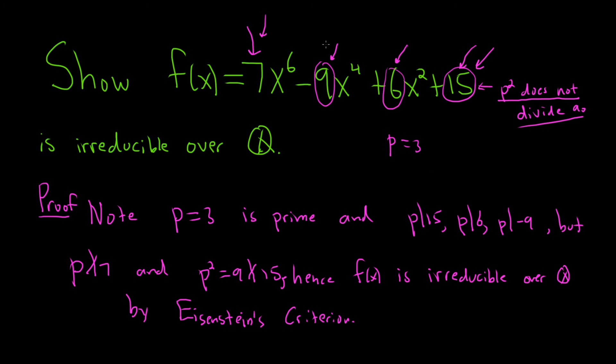I can find a prime that divides everything except the leading coefficient, and if that prime squared doesn't divide your constant term, then your polynomial is irreducible over Q.